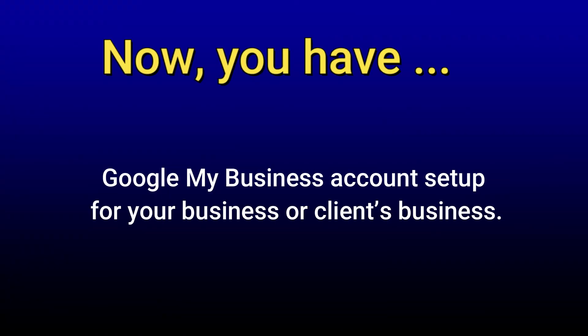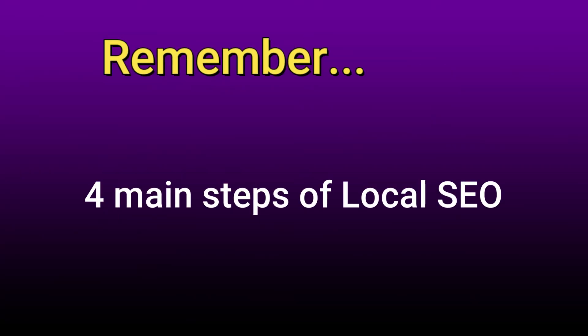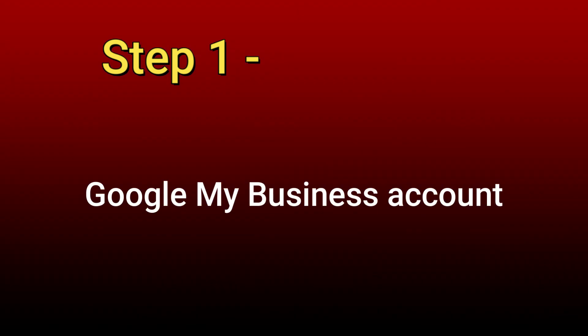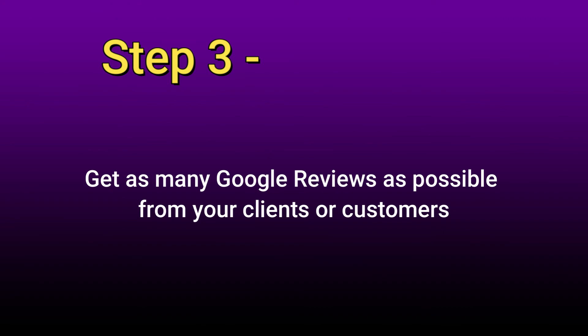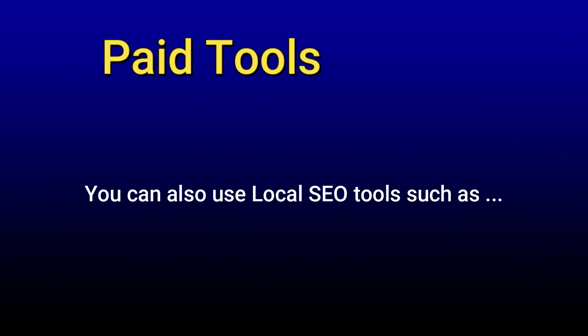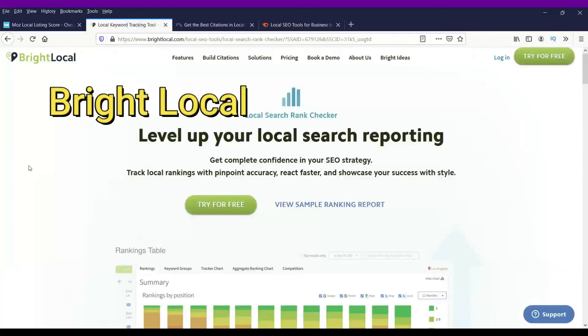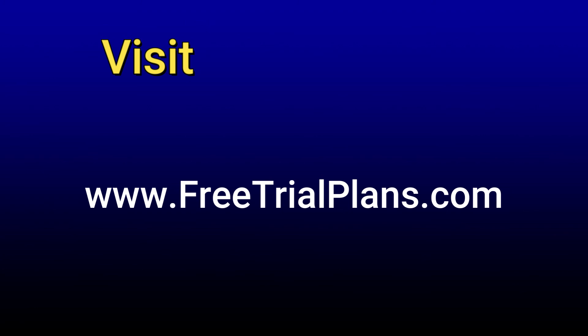Now you have a Google My Business account set up for your business or your client's business. Remember the four main steps of local SEO: first, Google My Business account setup; second, citation on as many local business directories as possible; third, get as many Google reviews as possible from your clients or customers; fourth, share your business on social media. You can also use local SEO tools such as Moz Local, BrightLocal, Whitespark, and SEMrush Local SEO — you will find links to these tools on my website, linked in the description box.